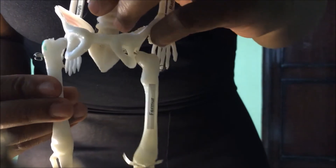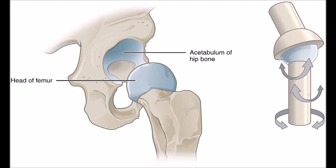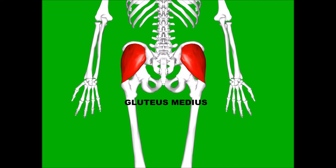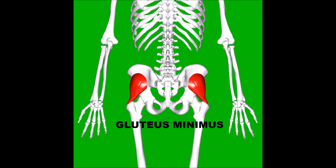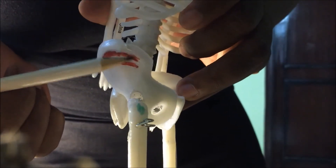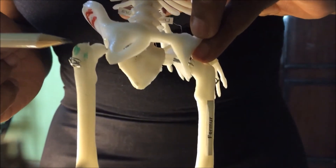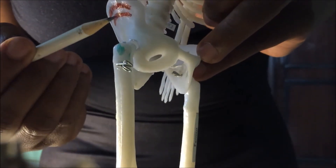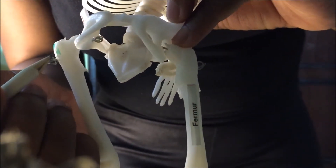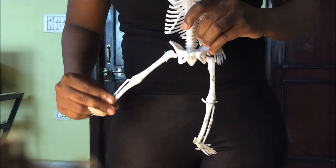The hip joint is the articulation between the head of femur and the acetabulum of the hip bone — a ball and socket synovial type of joint. The two main abductor muscles are the gluteus medius and the gluteus minimus. The gluteus medius originates from the ilium between the anterior and posterior gluteal lines and inserts on the lateral aspect of the greater trochanter. The gluteus minimus originates from the ilium just beneath the gluteus medius and inserts on the anterior aspect of the greater trochanter. Both are supplied by the superior gluteal nerve and their action is hip abduction and internal rotation.